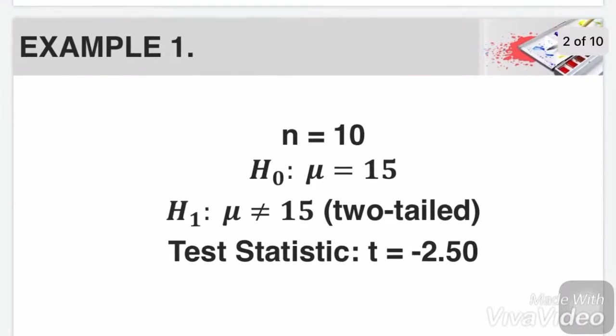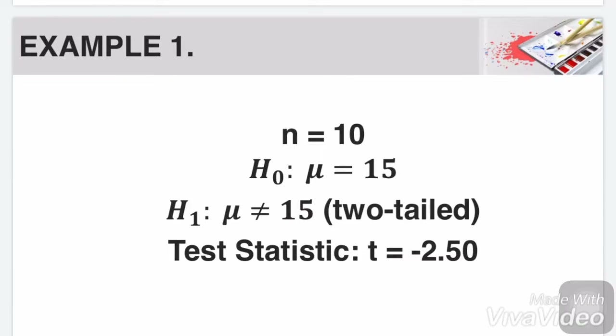Let's have example number 1. N equals 10, and the null hypothesis is mu equals 15, and our alternative is mu not equals 15. It means that it is a two-tailed t-test. Its test statistic computed is t equals negative 2.50.